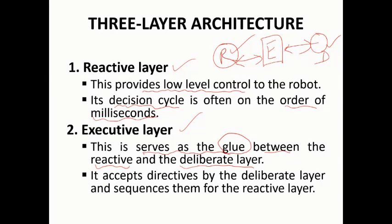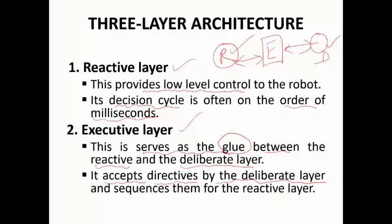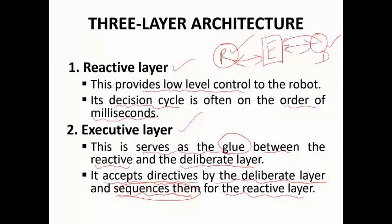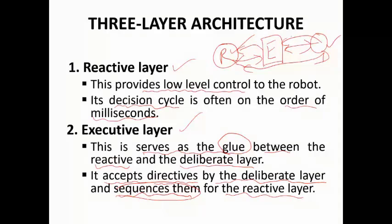The deliberate layer gives guidance and instructions to the executive layer. The executive layer then passes those instructions down to the reactive layer. This is how the three layers communicate: deliberate → executive → reactive.